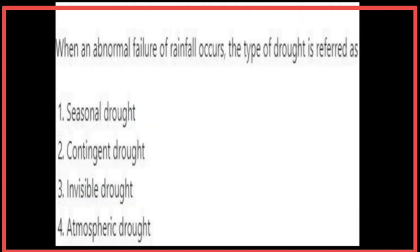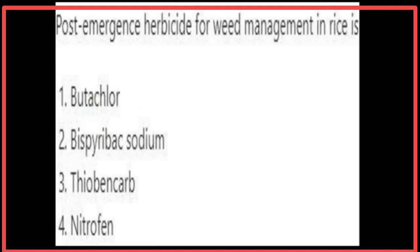When an abnormal failure of rainfall occurs, the type of drought is referred to as contingent drought. The post-emergence herbicide for weed management in rice is bispyribac sodium.